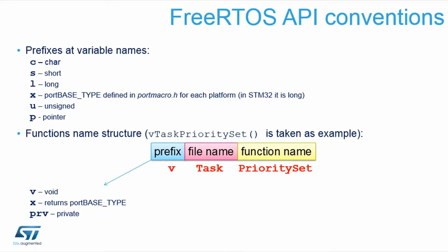When we speak about functions, it also has a prefix telling what return value it gives — whether it doesn't give anything, or a port base type, a specific type or return value, and whether the function is private or public. This way you can very easily recognize what the function returns and what parameters it takes.